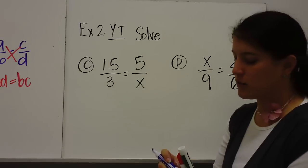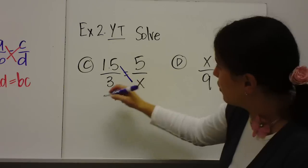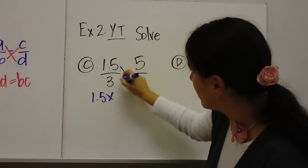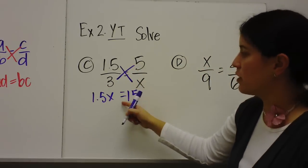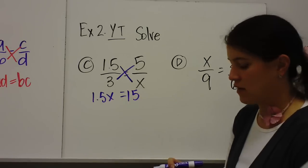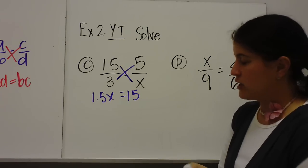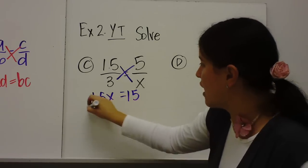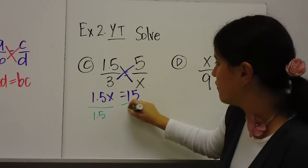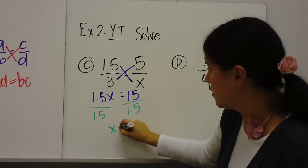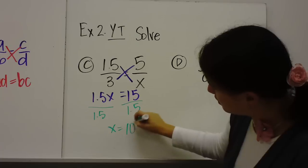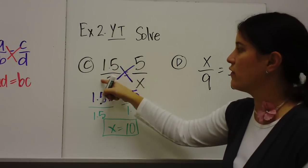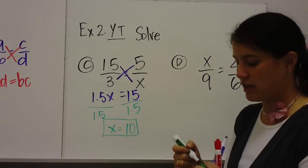Alright, so we're going to do the cross product. 1.5 times x is 1.5x equals 15. Notice I bring my equal sign down. And then I'm going to divide both sides by 1.5 and x equals 10. So that means 1.5 over 3 is equal to 5 over 10.